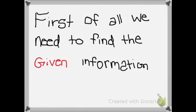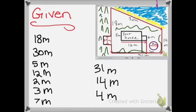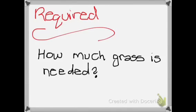First of all, we need to find the given information. Given information is all the measurements we have. The first measurement is 18 meters, second 30 meters, third 5 meters, fourth 12 meters, fifth 2 meters, sixth 3 meters, seventh 7 meters, eighth 31 meters, ninth 14 meters, and tenth would be 4 meters. What is required of us? How much grass is needed?